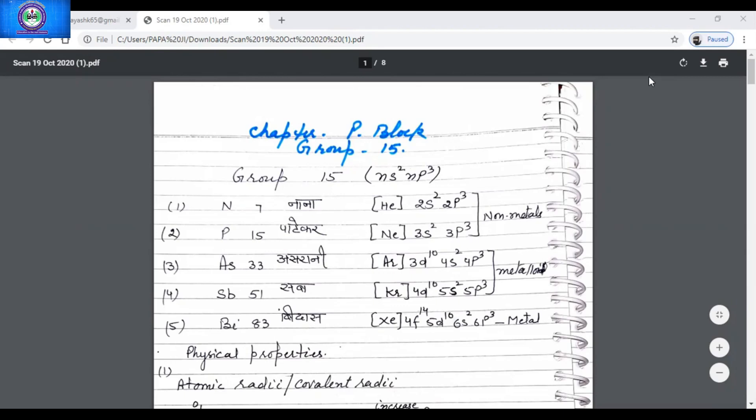Group 13 is known as boron family, group 14 carbon family, group 15 nitrogen family, group 16 oxygen family, group 17 halogen family, and group 18 is noble gases.